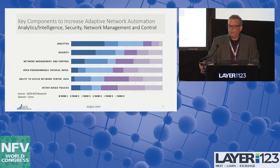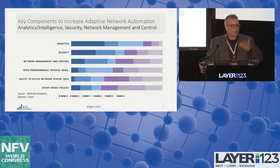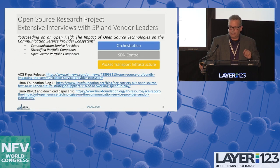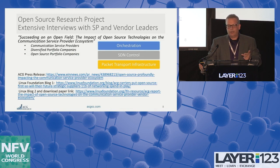The last slide for this analysis: what are the key components needed to increase adaptive network automation? Again, security and analytics intelligence bubble to the surface. Along with that is network management and control, and then open programmable access to data and infrastructure — so we can get information from what's actually happening live in the network. You can go to the Siena website to see the press release, and feel free to reach out if you have questions about this research.